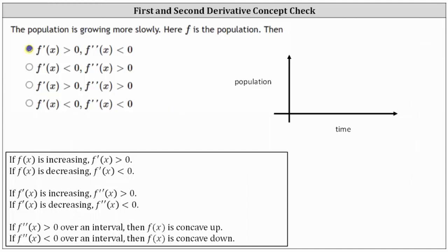Another approach would be to graph the situation and analyze the graph. If the population is growing over time but growing more slowly, the population function might look something like this. Notice how the function is increasing, which is why the first derivative is greater than zero. But the graph is concave down because it's growing more slowly over time, which is why the second derivative is less than zero or negative.